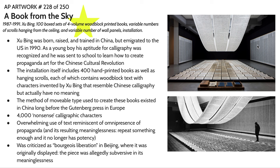This piece consists of 400 hand-printed books, hanging scrolls coming from the ceiling, and material posted on the walls. At the time Xu Bing was coming up as a teenager, if the government noticed an aptitude in calligraphy or drawing, they would send you to a school camp to create propaganda art for the Chinese Cultural Revolution. He noticed the ubiquity of propaganda and developed the notion that when something is so omnipresent, it loses meaning — similar to leaving notes around the house that you eventually stop processing.